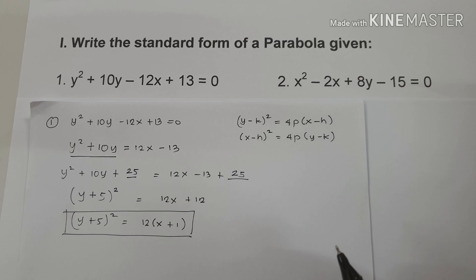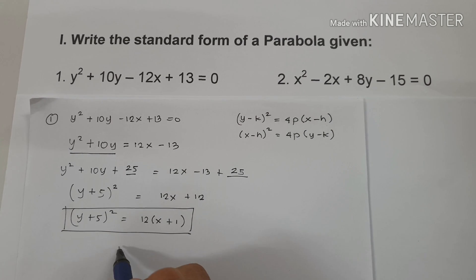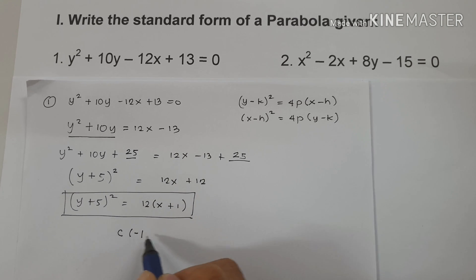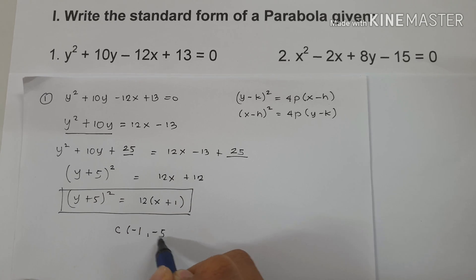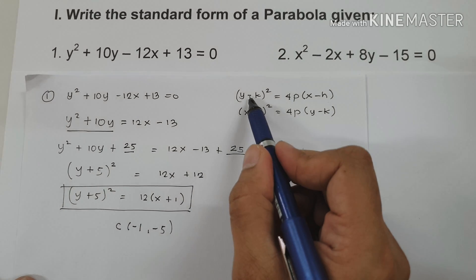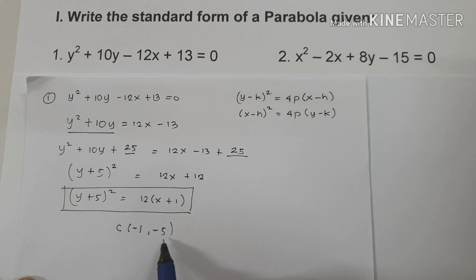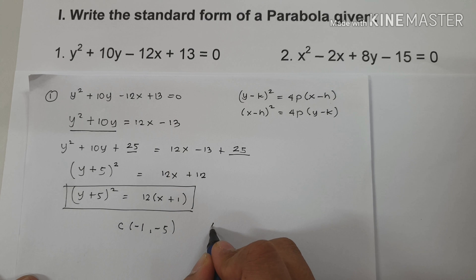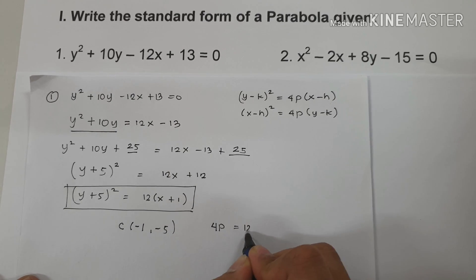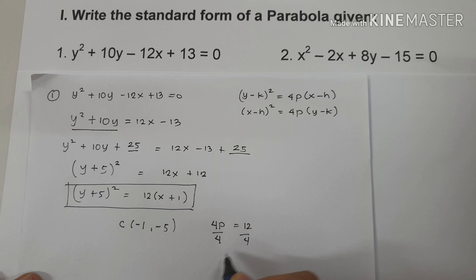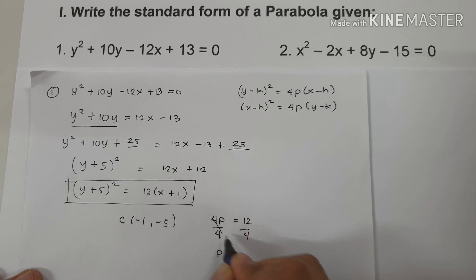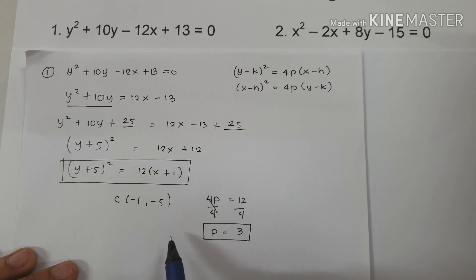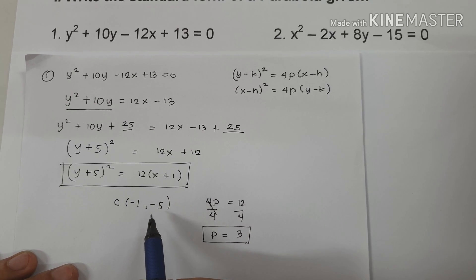From this equation we can extract key information. The value of h is negative 1 and the value of k is negative 5, because in our formula we have negative k and negative h. For the value of p: 4p equals 12, so dividing both sides by 4 gives p equals 3. Therefore, our parabola opens to the right with vertex at negative 1 and negative 5.